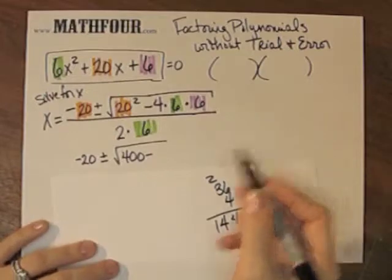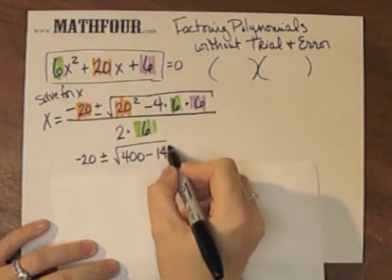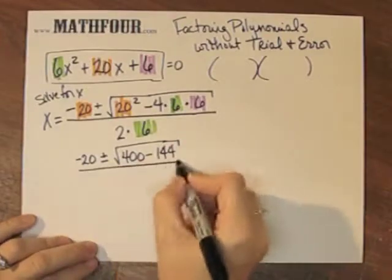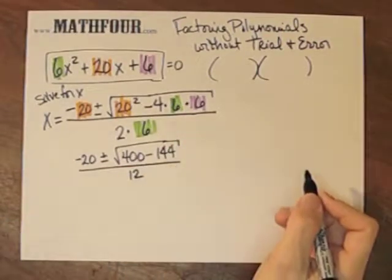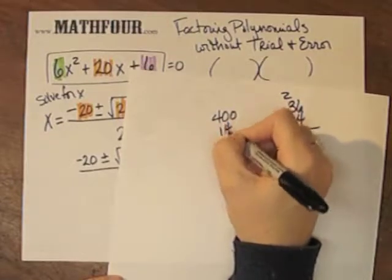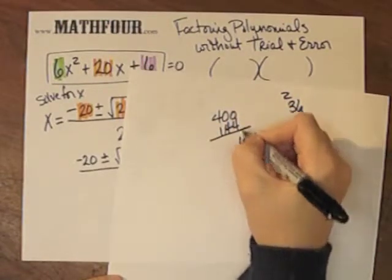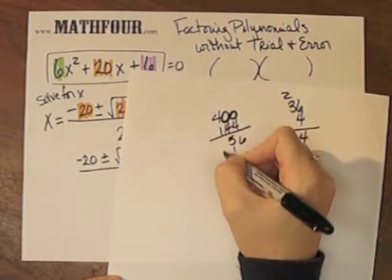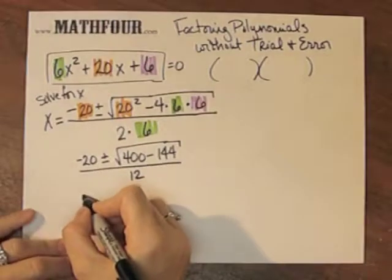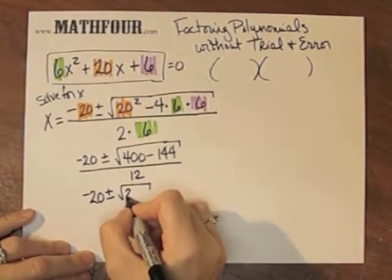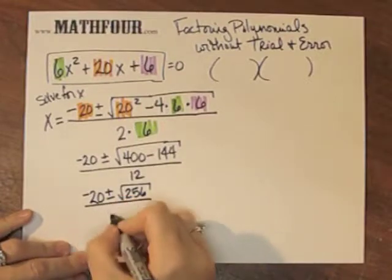144. So there's that 144. And 2 times 6 is 12. 400 minus 144. 4 plus 6 is 10, carry the 1. 4 plus 5 plus 5 is 10, carry the 1. And 256. How nice! So negative 20 plus or minus the square root of 256 over 12.